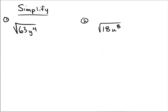Let's simplify these radical expressions in one of my favorite ways — I like to call this breaking out of prison. The way that we break out of prison is, since these are square root prisons, we need to find couples that break out of prison. So we take the number 63 and we break it down as far as we can.